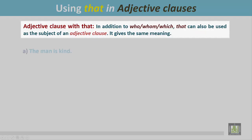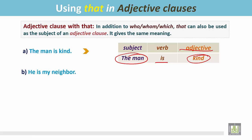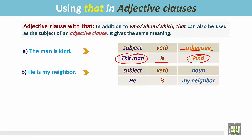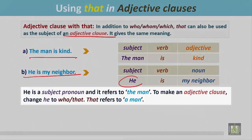It gives the same meaning. See the examples. The man is kind. In this sentence, the man is the subject, then the verb, and the adjective is kind. Another sentence: he is my neighbor. In this sentence, he is the subject, is the verb, and my neighbor is a noun. To make an adjective clause, see how we join. He is a subject pronoun and it refers to the man. To make an adjective clause, change this 'he' to 'who' or 'that'.